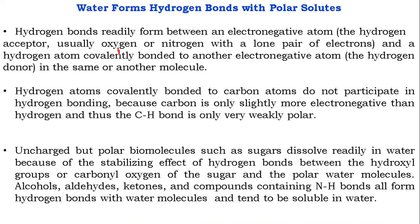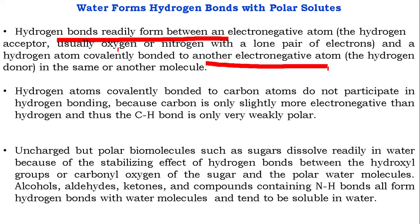Water forms hydrogen bonds with polar molecules. Hydrogen bonds are readily formed between an electronegative atom acting as a hydrogen acceptor and a hydrogen atom covalently bonded to another electronegative atom acting as a hydrogen donor. Hydrogen atoms covalently bonded to carbon atoms do not participate in hydrogen bonding, because carbon is only slightly more electronegative than hydrogen, so carbon is not a hydrogen donor.